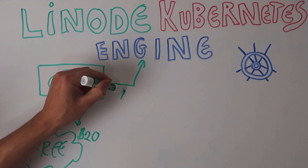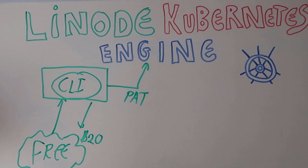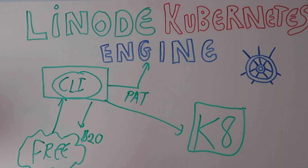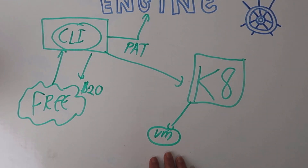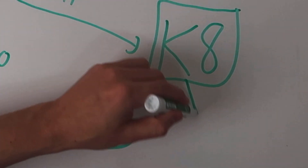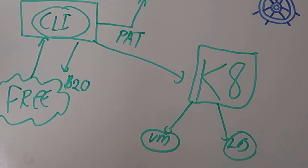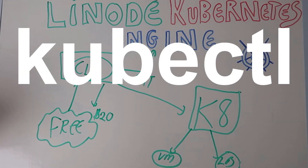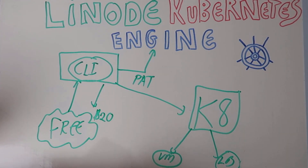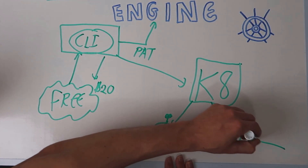We're going to use the CLI to log into our free account and sign in to Linode using what's called a personal access token, which gives us authentication and authorization to start working in Linode Cloud. We'll use the CLI to spin up the Kubernetes cluster. In Linode, Kubernetes is free to run — you don't pay any control plane costs or management overhead like some other cloud providers. You only pay for what you use: virtual machines, load balancers, and volumes. In this demo we'll spin up a Linode VM and a load balancer, giving us a public IP, then deploy a hello world application and send traffic via the load balancer to the container.